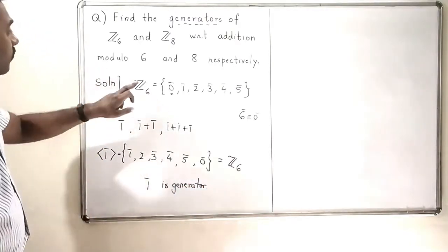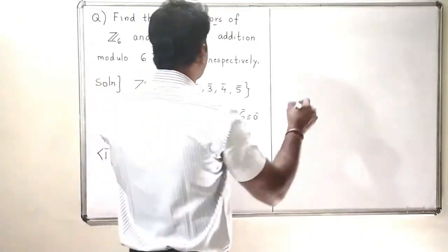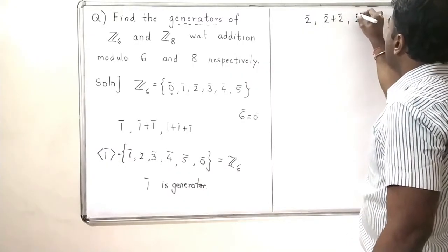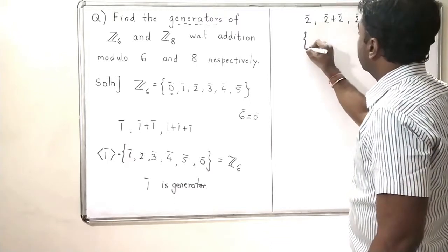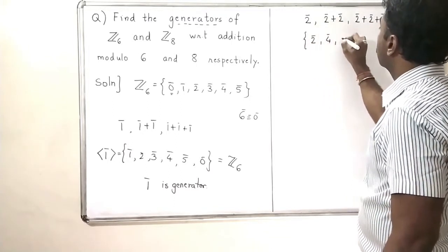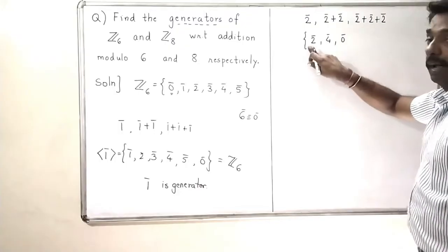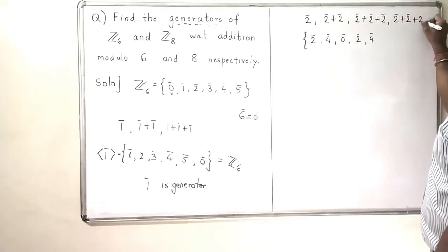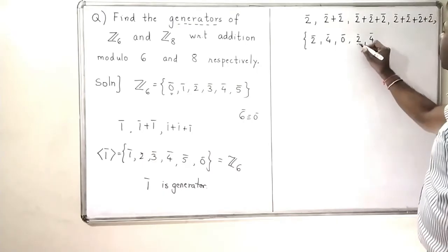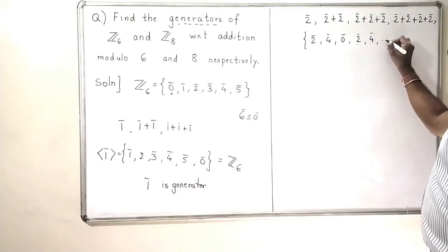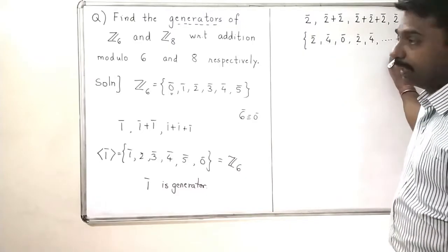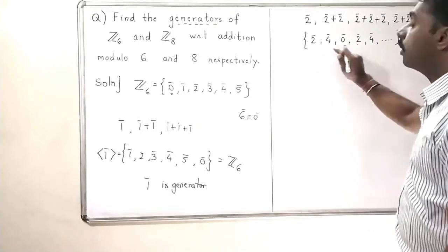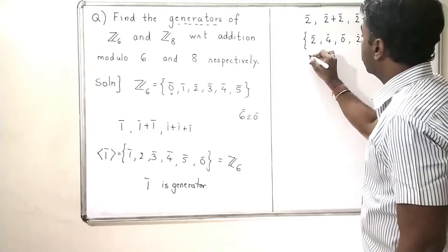If I try 2 bar: 2 bar once is 2 bar, then 2 bar plus 2 bar is 4 bar, and 2 bar plus 2 bar plus 2 bar is 6 bar which is 0 bar. Adding it four times gives 2 bar again, so the list repeats — only 2 bar, 4 bar, and 0 bar. So 2 bar will never generate 1 bar, 3 bar, and 5 bar. Therefore 2 bar is not a generator.